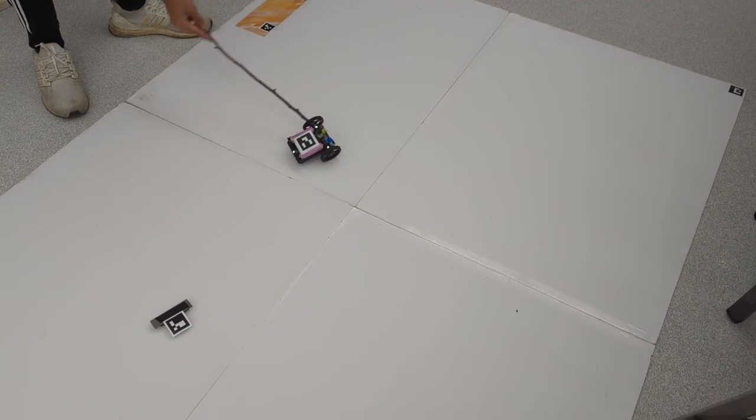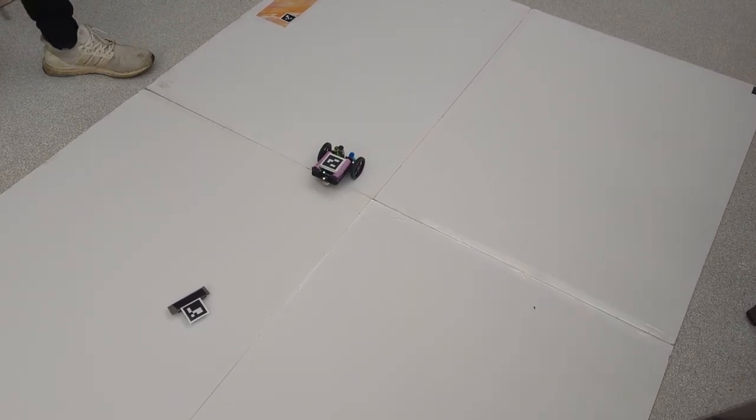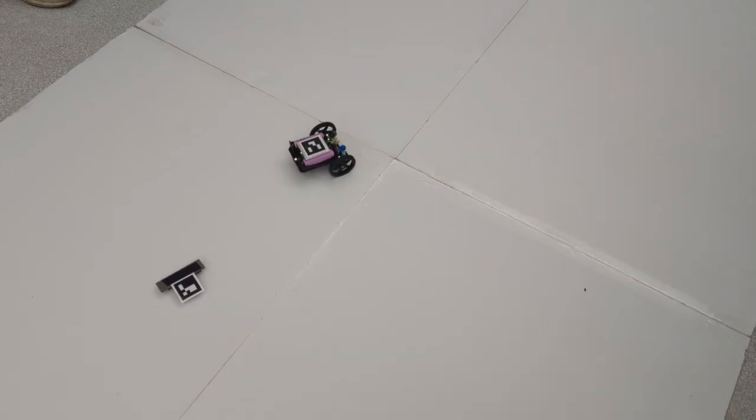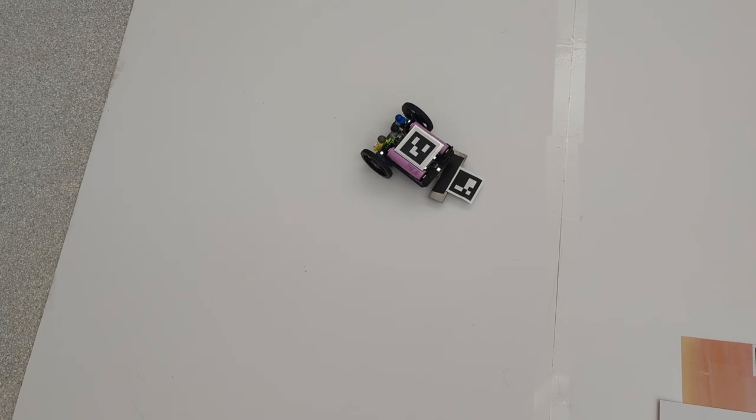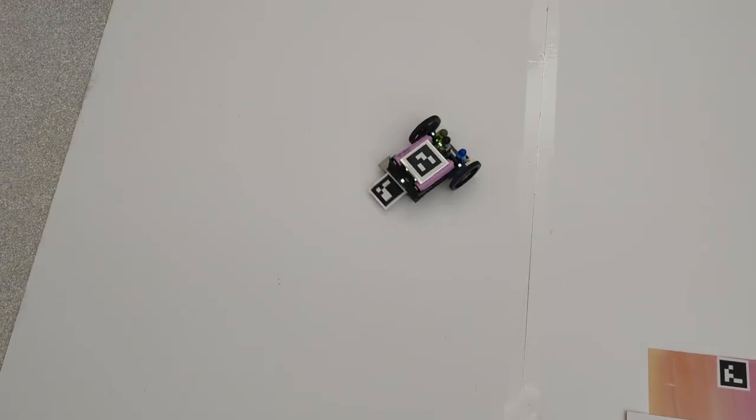This is an exaggerated version of what the feedback controller does. Whenever the robot slips or loses traction, the feedback controller provides extra force to move the robot quickly to where it needs to be in order to make sure that the robots meet the waypoints at the exact time that the planner specifies. The robots also shake their heads in disapproval in response to being poked at.